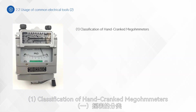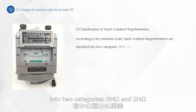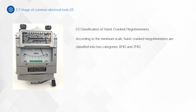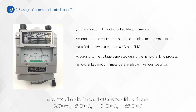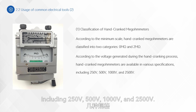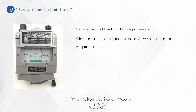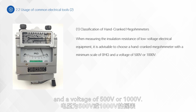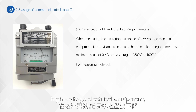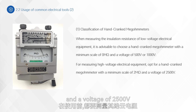According to the minimum scale, hand-cranked megometers are classified into two categories: 0 megaohm and 2 megaohm. According to the voltage generated during hand-cranking, they are available in various specifications including 250 volts, 500 volts, 1,000 volts, and 2,500 volts. When measuring low-voltage electrical equipment, choose a megometer with a minimum scale of 0 megaohm and a voltage of 500 volts or 1,000 volts. For high-voltage electrical equipment, opt for a megometer with a minimum scale of 2 megaohm and a voltage of 2,500 volts.